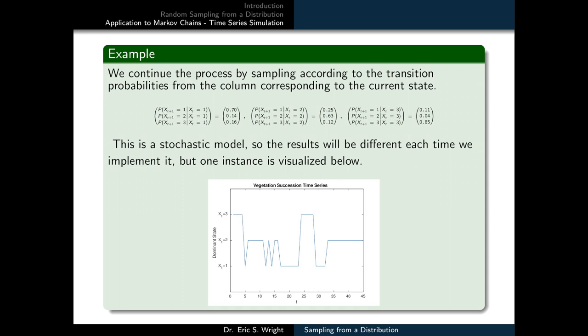We would continue the process by sampling according to the transition probabilities from the column that corresponds to whatever vegetation category is dominating our patch in the landscape at the current time. This is a stochastic model, so the results are going to be different each time we implement it. But one instance is visualized below where we're graphing the current dominant state versus time. And we can see that there's some random jumping from state to state from time to time, and then at other times there's constant residence at that state over a few time steps. So it's pretty typical of this kind of Markov chain model.